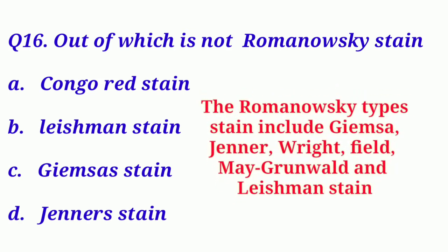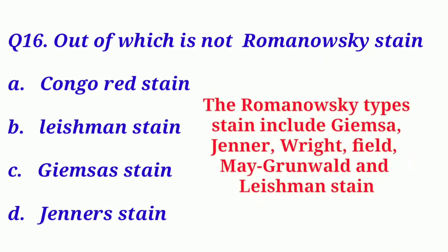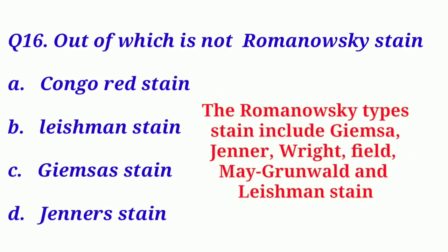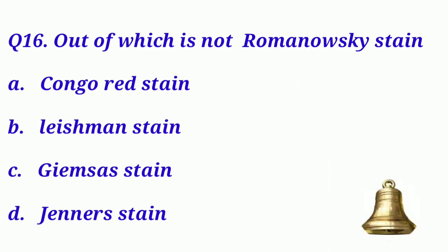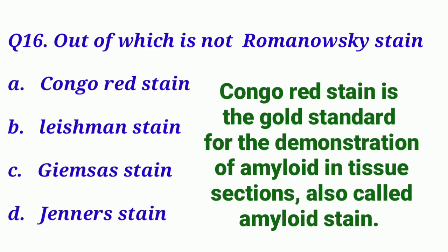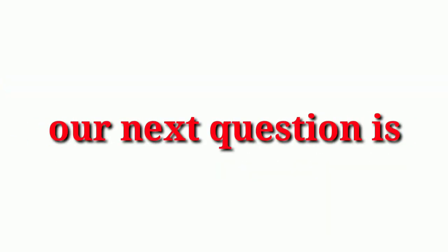Congo red stain is the gold standard for the demonstration of amyloid in tissue sections, also called amyloid stain. So our correct option is Option A: Congo red stain.